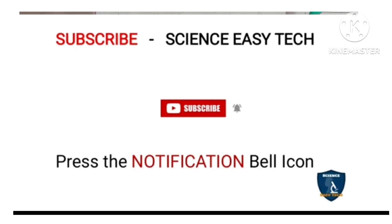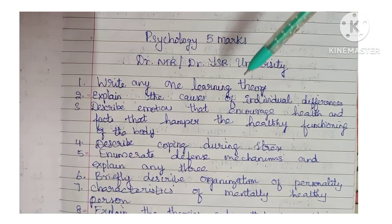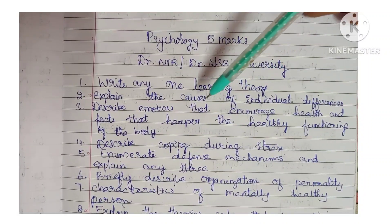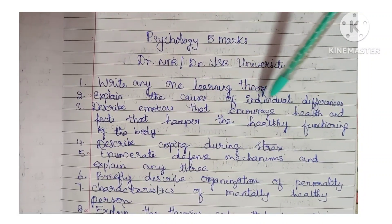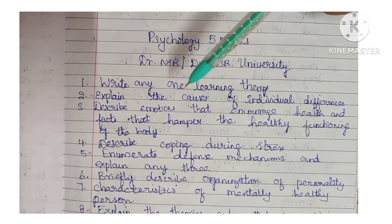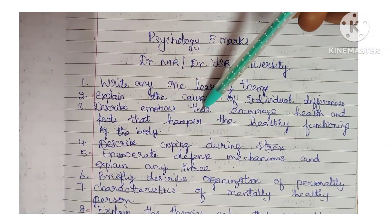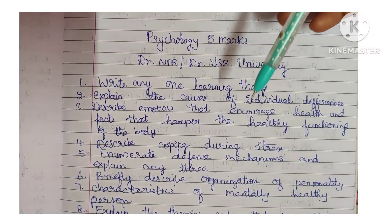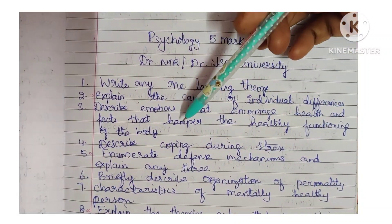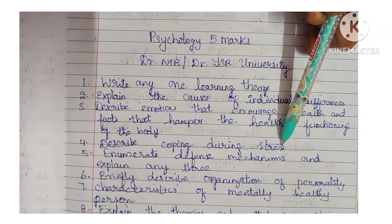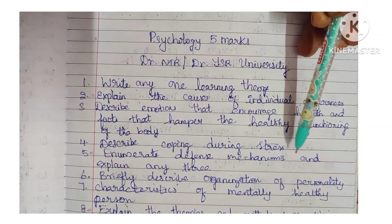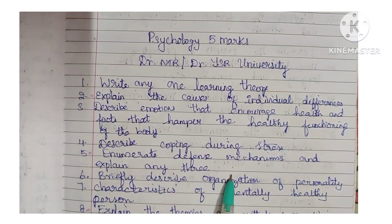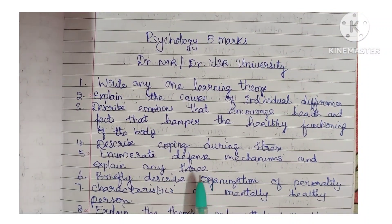Let's move on to the questions asked in the 5 marks session. First question: write any one learning theory. Second question: explain the causes of individual difference. Next: describe emotions that encourage health and facts that have hampered the healthy functioning of the body. Next: describe coping during stress.